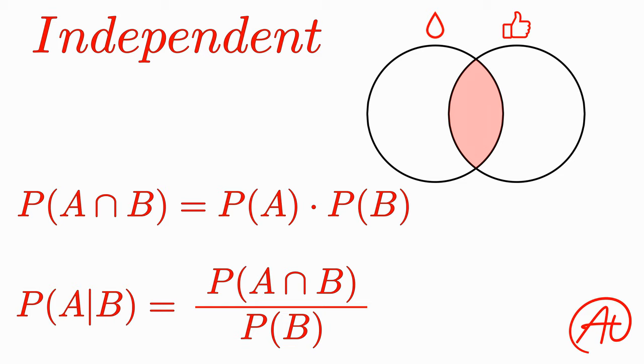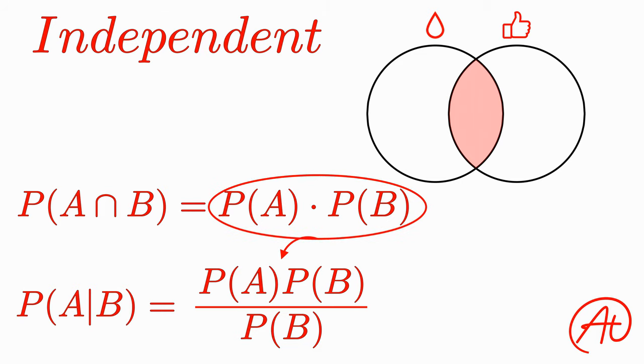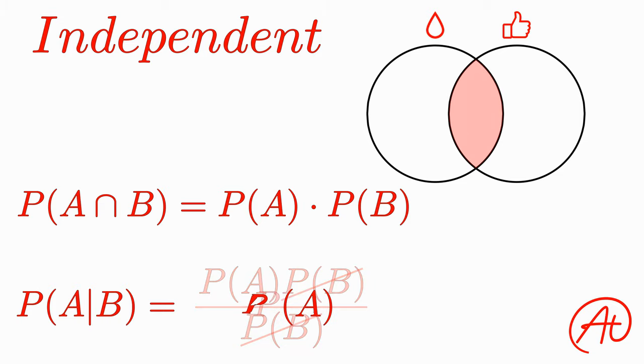Now, within our formula, we see this probability of A and B component. If A and B are independent, we can substitute in our independence formula to this equation, and then cancel out the probability of B from the top and bottom, to get that the probability of A given B is simply equal to the probability of A. And this makes sense. If the two events are independent, and you are trying to find the probability of A occurring under the condition that B also occurs, well, it doesn't matter that B occurs, since they're independent, so it just becomes the probability of A occurring.